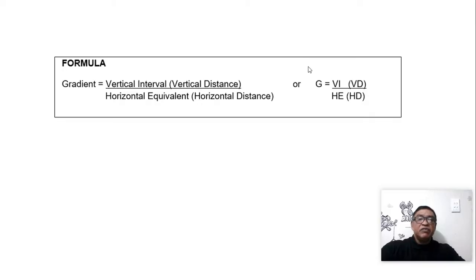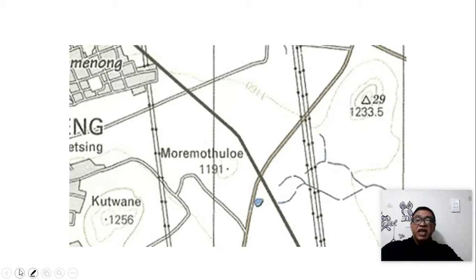First of all, we need to look at the formula itself. The formula reads vertical interval over horizontal equivalent. Remember, formulas give us an idea of what we're looking at. Vertical talks about height, and horizontal talks about the distance between the two points for which you are measuring the gradient itself. VI over HE is the more preferred method, and if you look at past papers, you will find that they give you that formula.